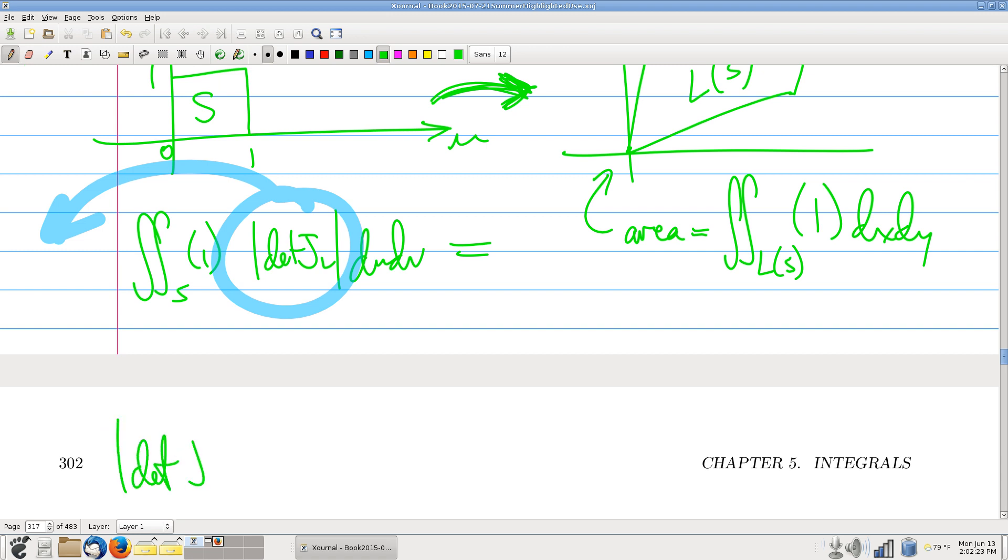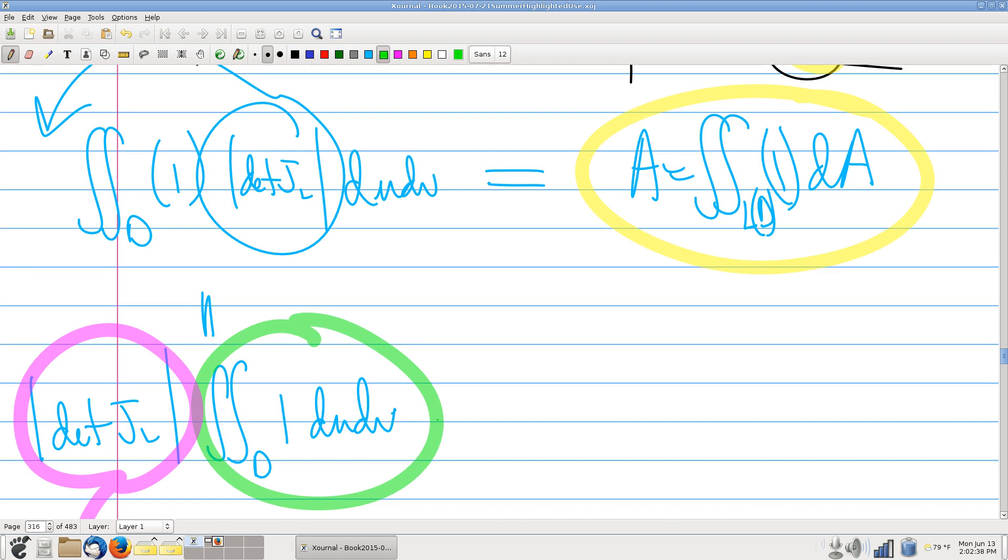Absolute value of the determinant of the Jacobian L times double integral over the unit square of one. So it looks awfully familiar. I mean, absolute value of the Jacobian determinant times a double integral over one.